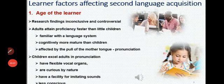Hello students, today we are going to talk about factors affecting second language acquisition. Second language acquisition, aarthaat, दूसरी भाषा का अर्जन करना या दूसरी भाषा को सीखना. दूसरी भाषा को सीखने में कौन-कौन से ऐसे कारक हैं जो प्रभाव डालते हैं. Factors affecting second language acquisition. There are mainly two types of factors that affect second language acquisition: first is related to learners and second is related to environment.